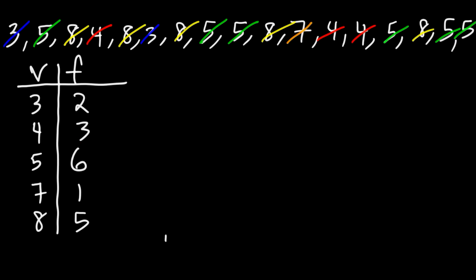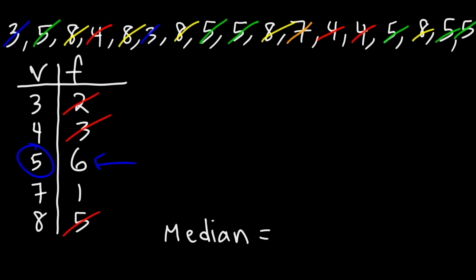Now let's calculate the median. The median is basically the middle number in the data set if it's arranged in increasing order. So how can we use the frequency table to determine the median? Notice that we have the first 5 numbers on the left and the first 5 numbers on the right. If we follow this pattern, it is clear that the middle number is going to be a 5. So that's a quick and simple way to use the table.